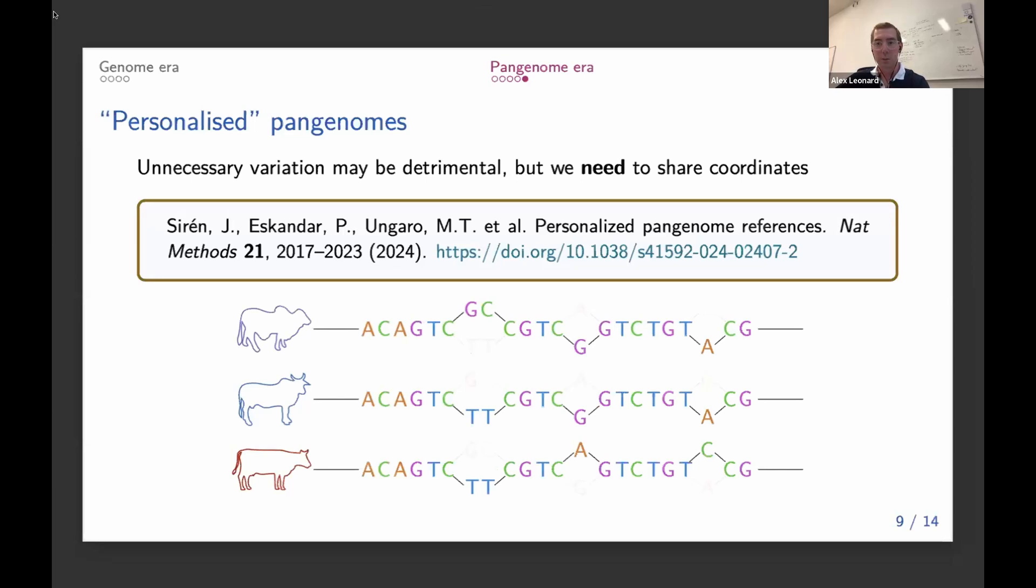The key difference here is because we're starting from the same graph, we can reference the same nodes, the same coordinates in our pangenome. So the graph is a little bit more useful. It functions very well for individual samples.